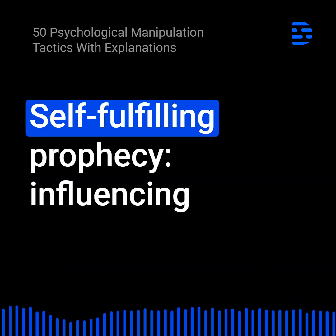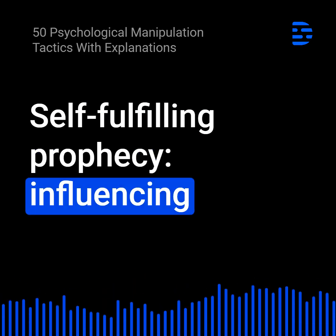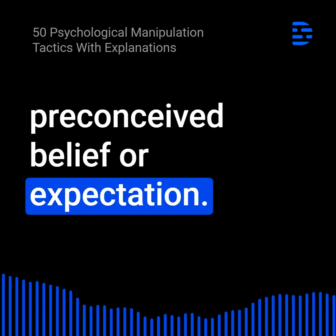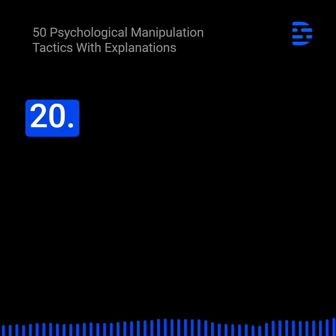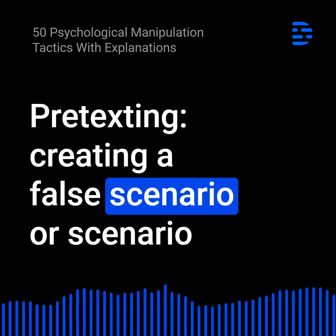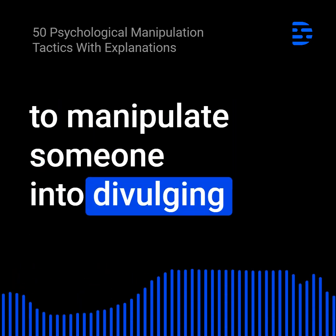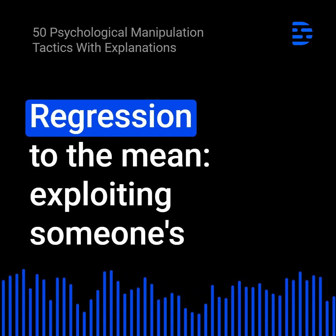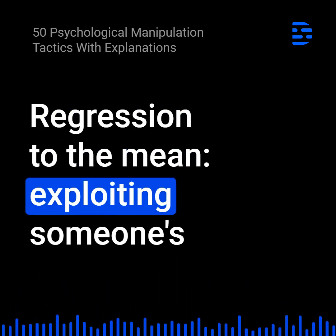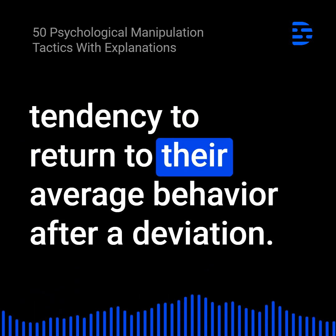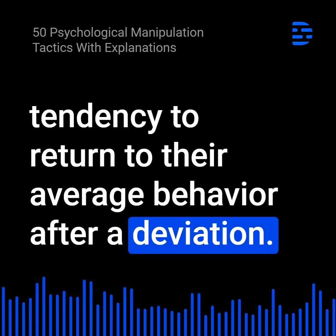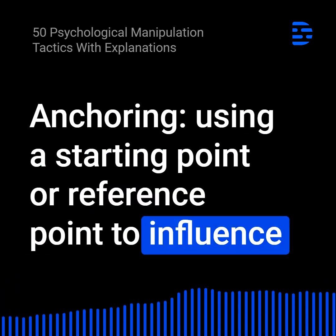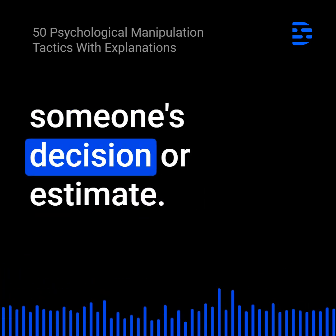19. Self-fulfilling prophecy: Influencing someone to act in a way that confirms a preconceived belief or expectation. 20. Pretexting: Creating a false scenario to manipulate someone into divulging information or taking a specific action. 21. Regression to the mean: Exploiting someone's tendency to return to their average behavior after a deviation. 22. Anchoring: Using a starting point or reference point to influence someone's decision or estimate.